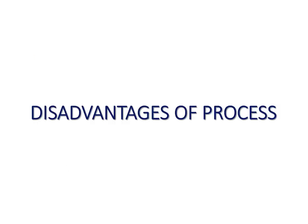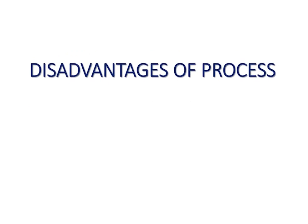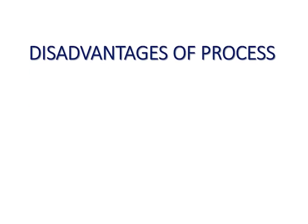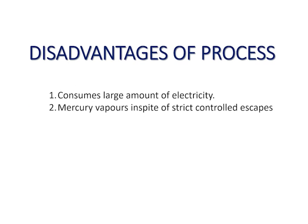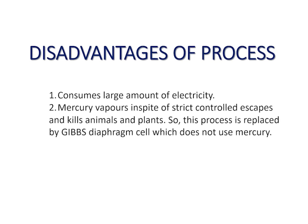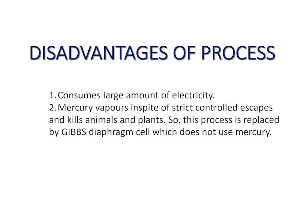Disadvantages of the process: It consumes a large amount of electricity. Mercury vapours, in spite of strict controls, escape and kill animals and plants. So this process is replaced by the Gibbs diaphragm cell, which does not use mercury.